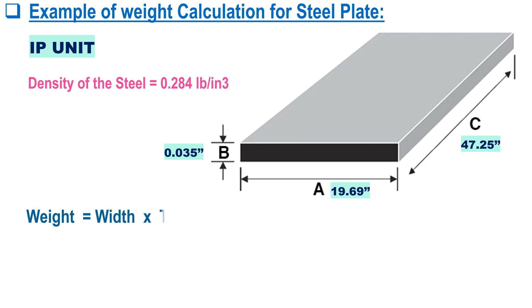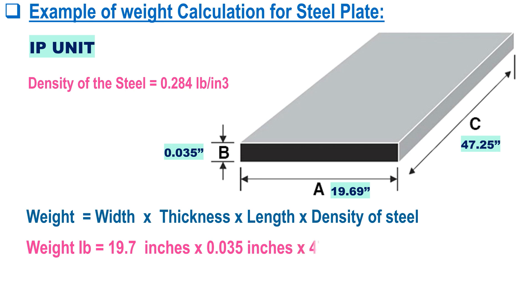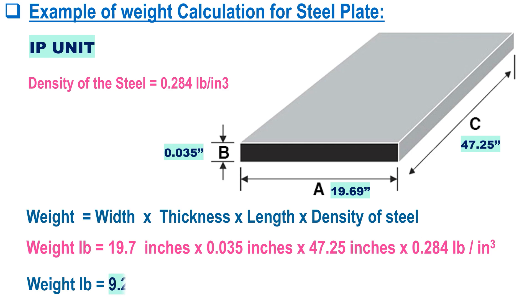The density of steel equals 0.284 pounds per cubic inch. So the weight in pounds equals 19.7 inches, multiplied by 0.035 inches, multiplied by 47.25 inches, and multiplied by 0.284 pounds per cubic inch. The above calculation demonstrates how to find the weight of a steel plate using the imperial units formula.